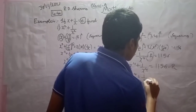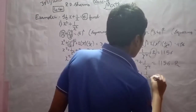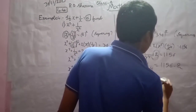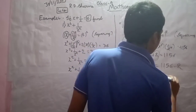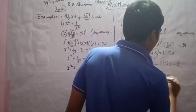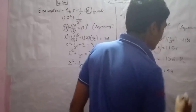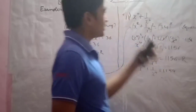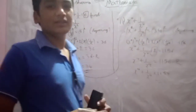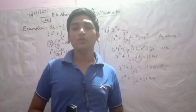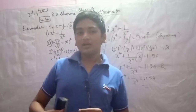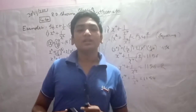Transposing this plus 2 to the right hand side gives negative 2, and 1156 minus 2 equals 1154, which is the final answer for the second part. Thank you for watching this video — please share and subscribe to my channel.